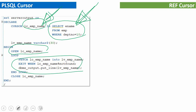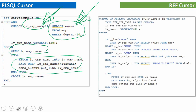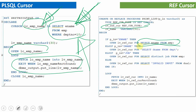Now we'll see one example for ref cursor. The key difference in terms of ref cursor is the association of the query. In normal cursor, the query is associated at the declaration point itself. Whereas in ref cursor, the query you are going to associate to the ref cursor variable is assigned at runtime — not at the declaration time. As you can see here, I have declared a ref cursor variable, and the query is assigned at runtime.